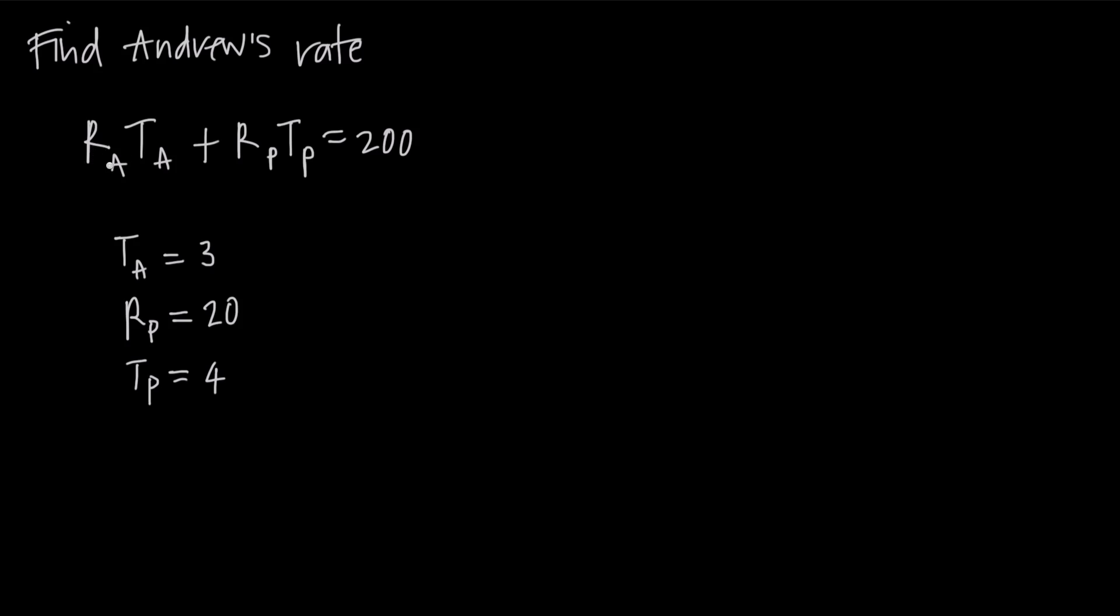So we just have r sub a times t sub a plus r sub p times t sub p equals 200. The reason that we sometimes use subscripts instead of just variables is that they can be very descriptive, much more so than variables. For example, if we have this problem where a represents Andrew and p represents Peter, and we want to say Andrew's rate times Andrew's time plus Peter's rate times Peter's time equals 200, then using these subscripts can be very descriptive.